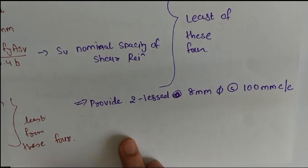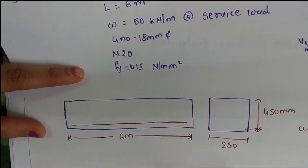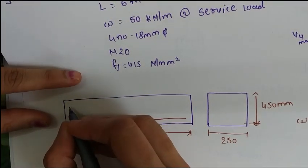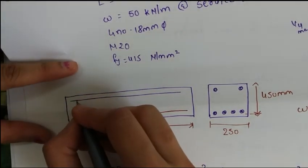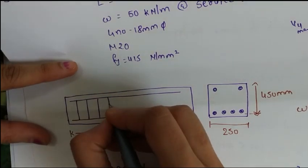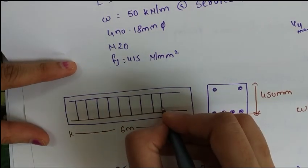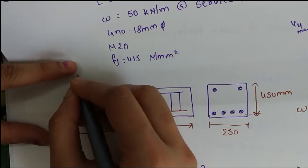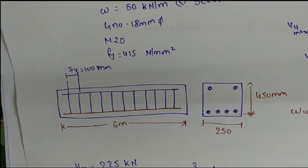We provide 2-legged stirrups of 8 mm bar diameter at 100 mm center to center. Drawing the reinforcement detail, the longitudinal section shows the stirrups spaced at SV = 100 mm along the length of the beam, with hanger bars at the top and main reinforcement at the bottom.